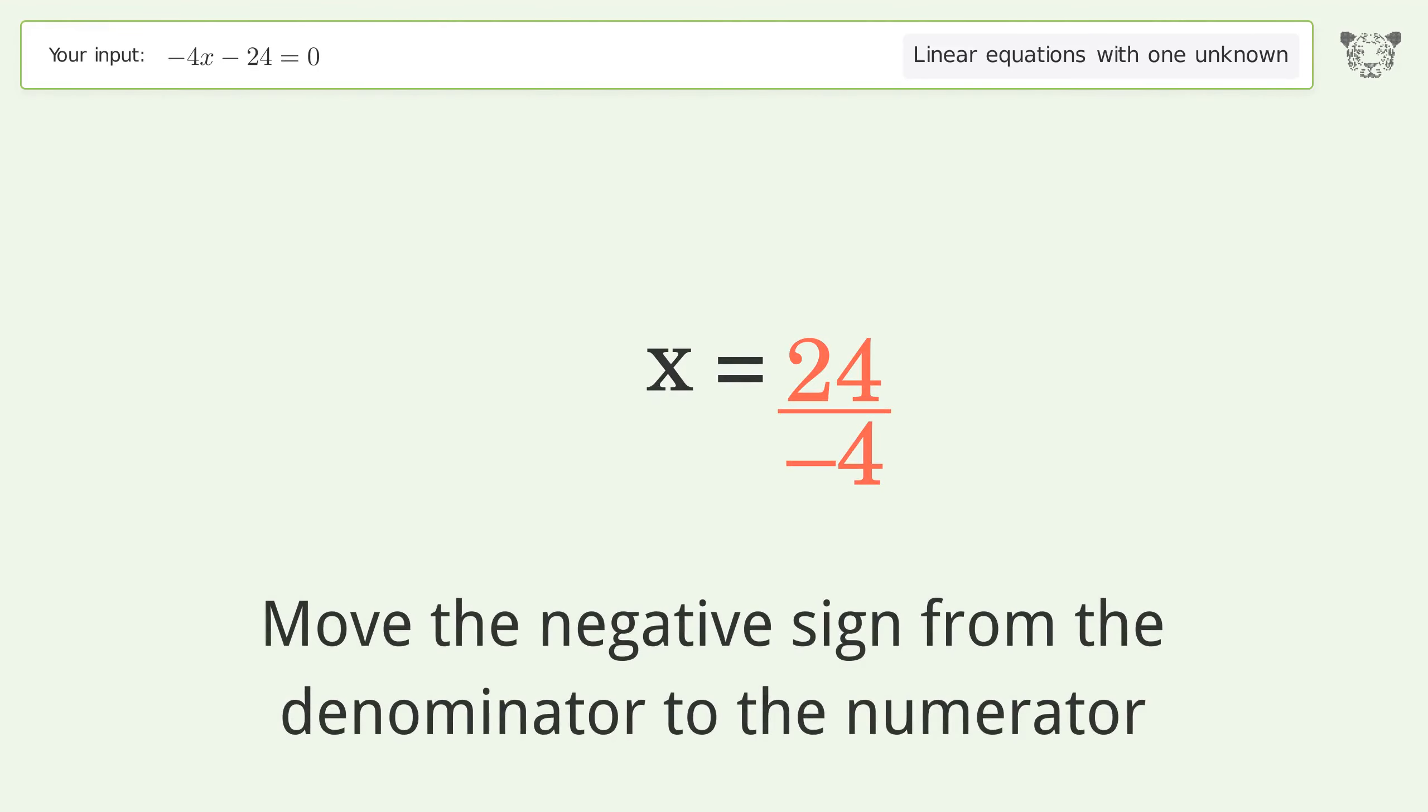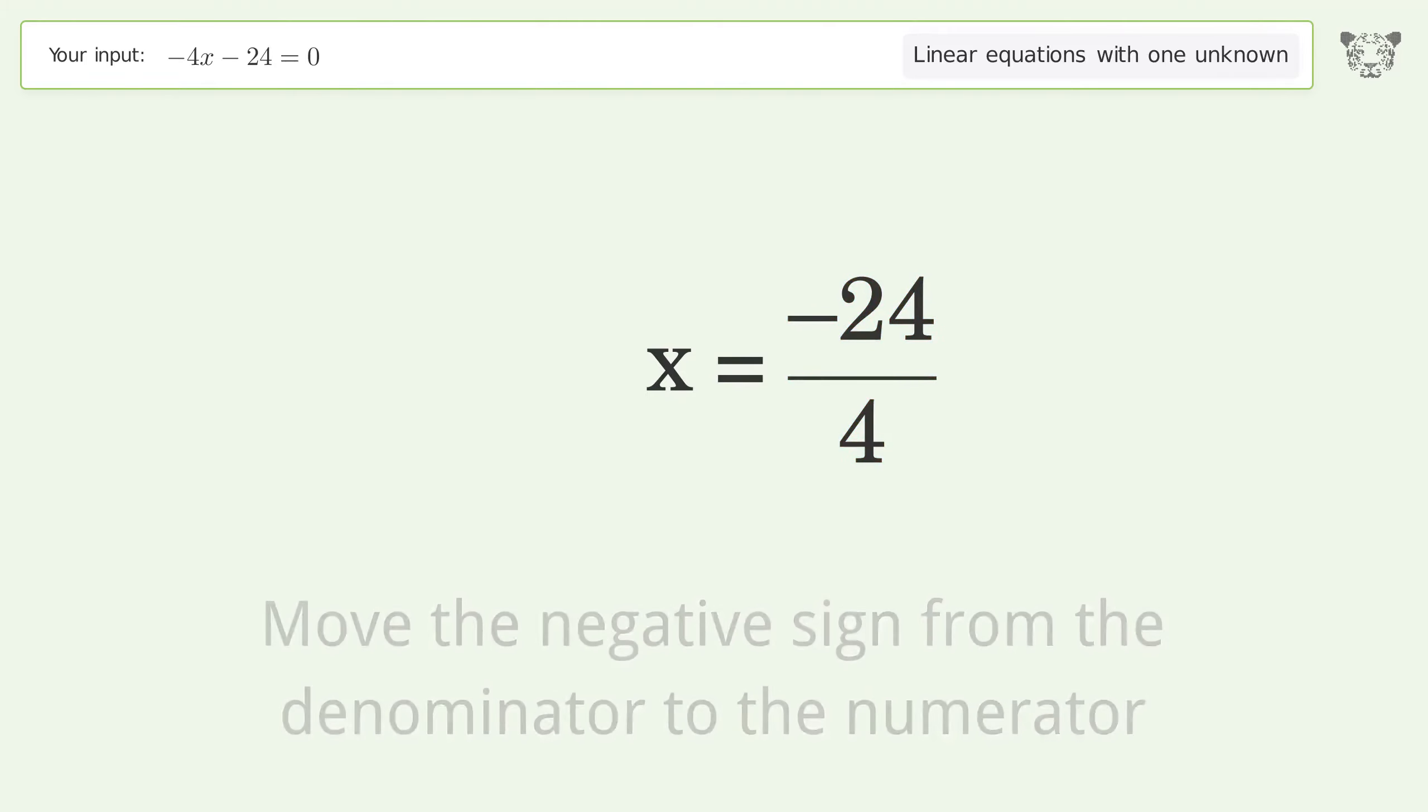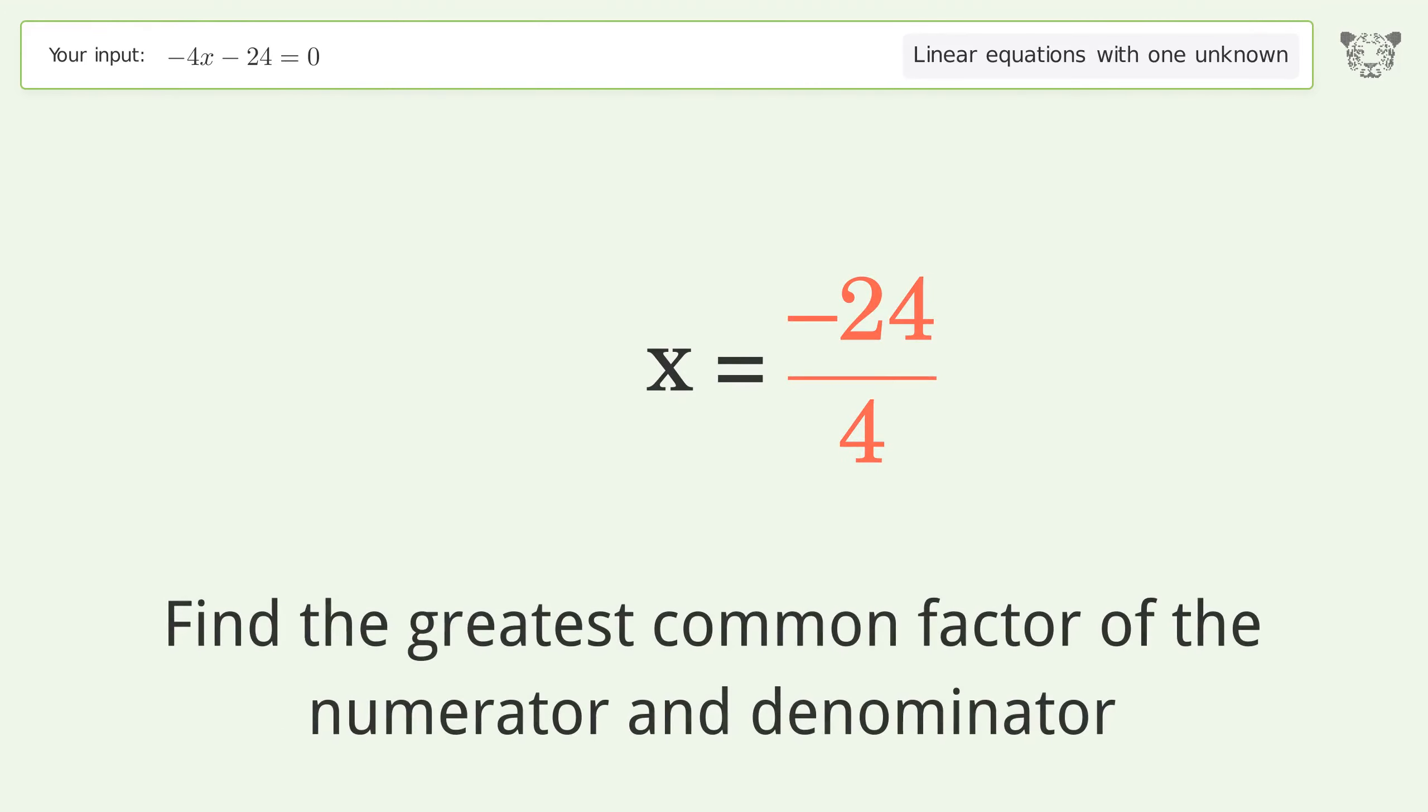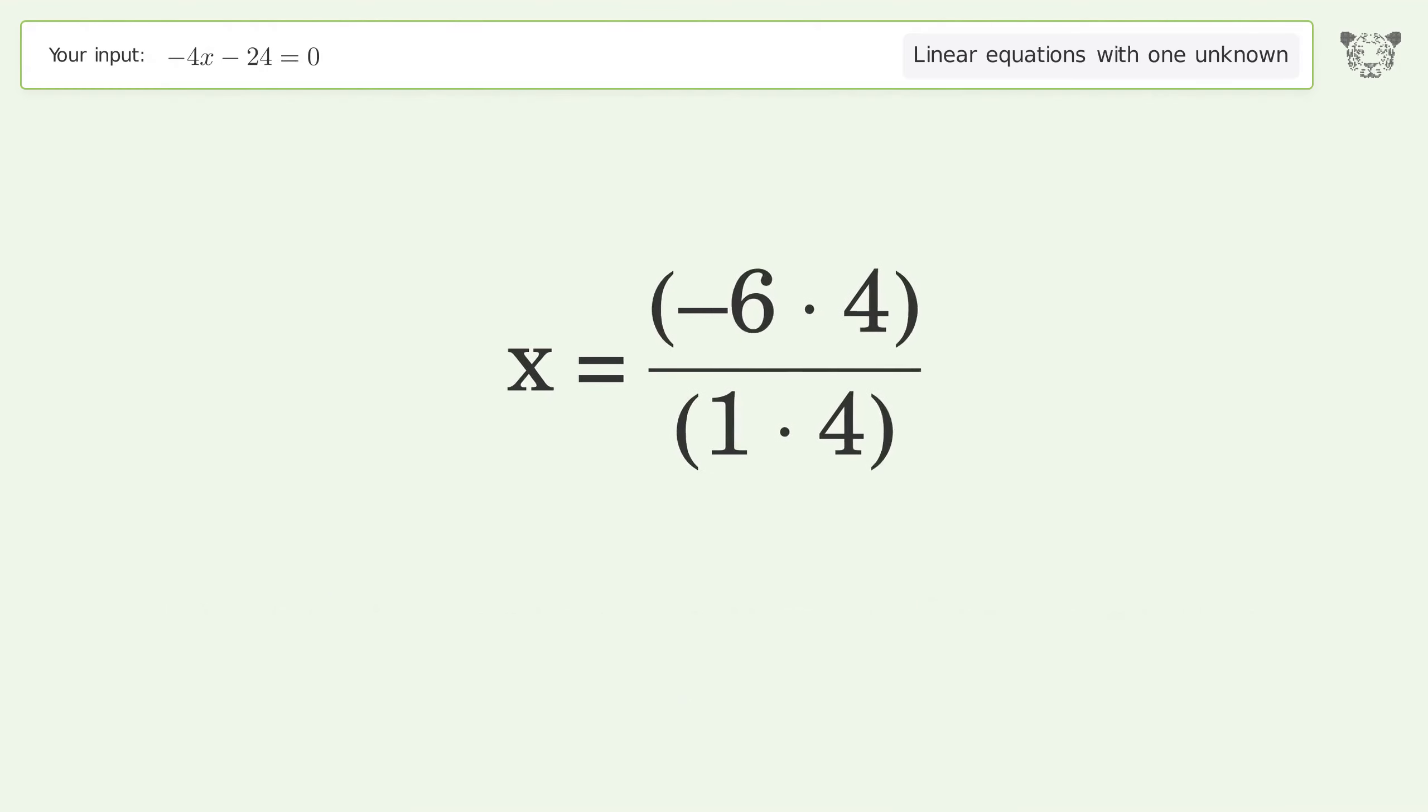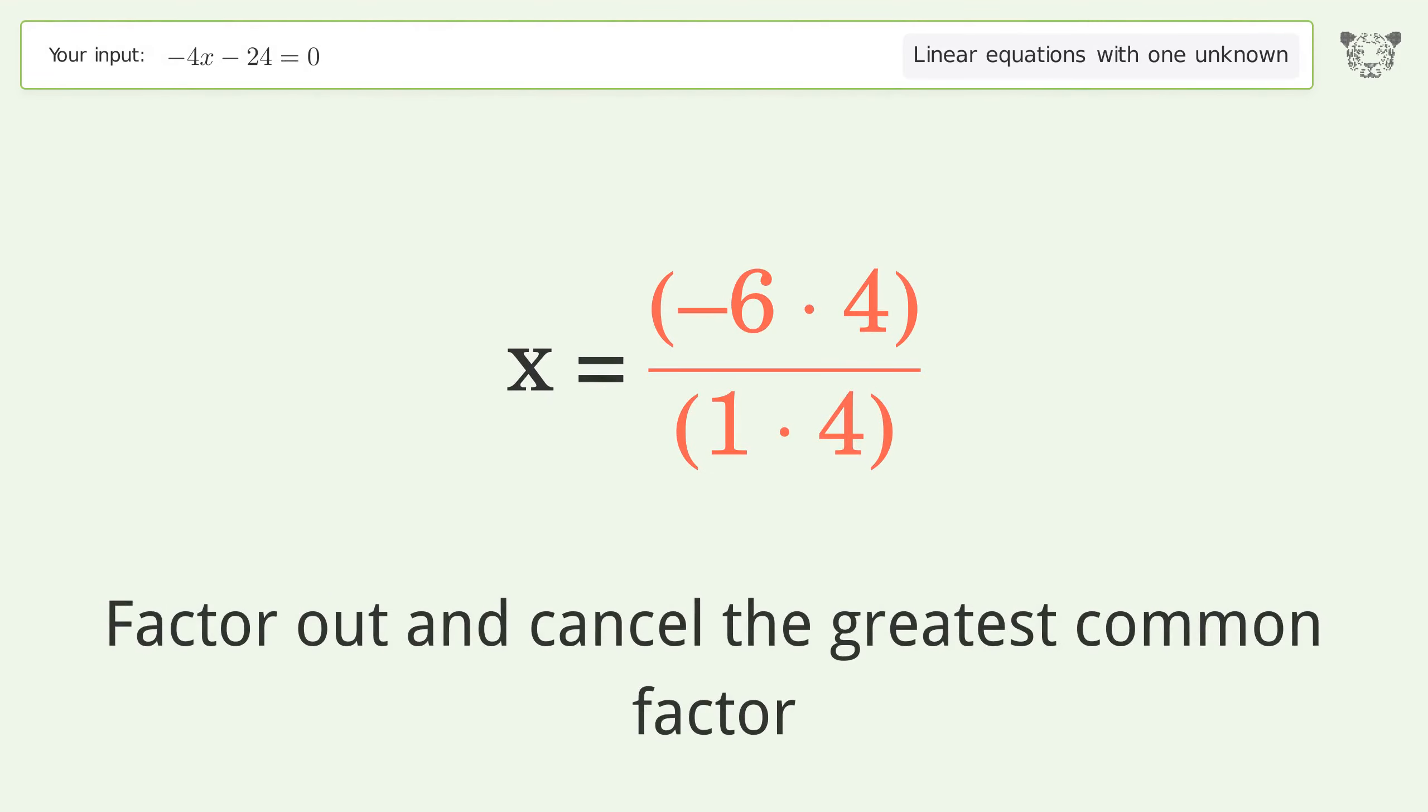Move the negative sign from the denominator to the numerator. Find the greatest common factor of the numerator and denominator. Factor out and cancel the greatest common factor.